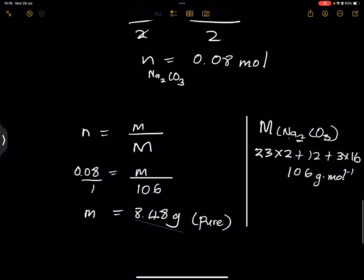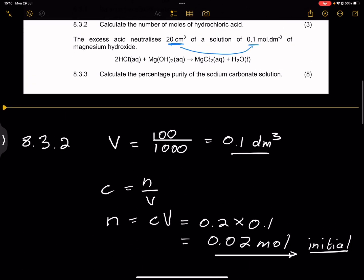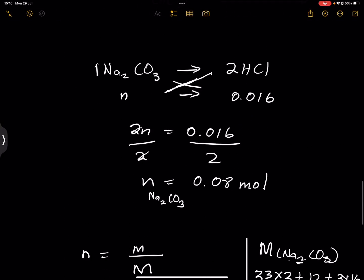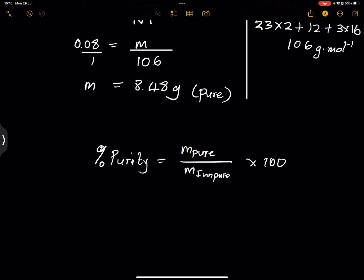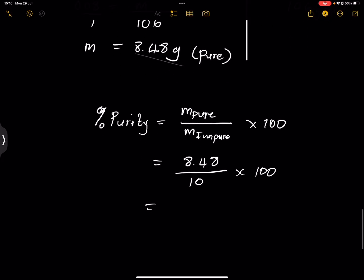They wanted the percentage purity. For percentage purity, we take the mass of the pure sodium carbonate divided by the total mass of the impure sample, multiplied by 100: 8.48 ÷ 10 × 100 = 84.8%. And that is how we calculate the percentage purity.